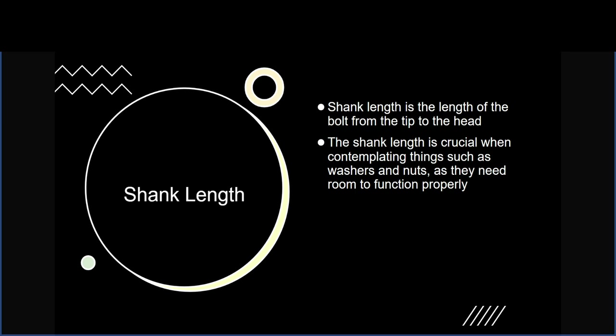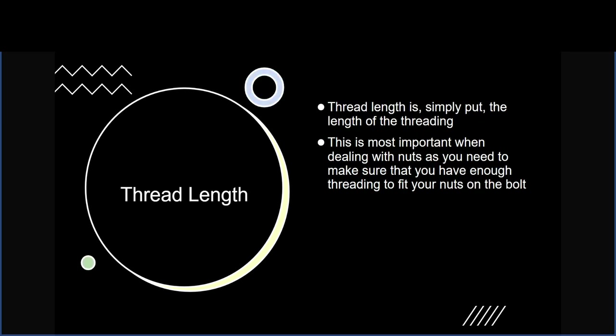The shank length is the length of the bolt from tip to head and is crucial when considering washers and nuts, as they need room to fit on the bolt while leaving enough room for vibration clearance. Thread length is the length of the threading and is most important when dealing with nuts — you need enough threading for the nut to fit and have additional thread in case of vibration, but not so long that your part can't function properly.